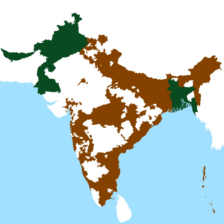The second schedule listed the districts provisionally included in the new province of West Punjab: Lahore Division included the districts of Gujranwala, Lahore except Pathankot Tehsil, Sheikhupura, Sialkot, and Shakargarh Tehsil of Gurdaspur District. Rawalpindi Division included the districts of Attock, Gujrat, Jhelum, Rawalpindi, and Shahpur. Multan Division included the districts of Dera Ghazi Khan, Jhang, Lyallpur, Montgomery, Multan, and Muzaffargarh.